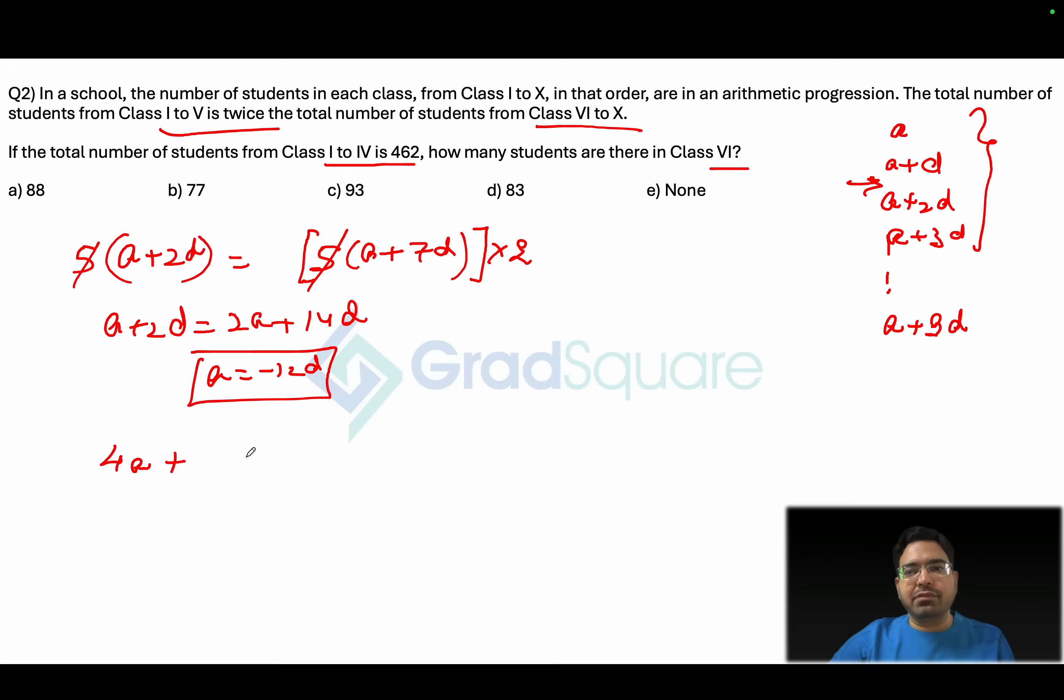So 4a plus 6d will be the number of students from class 1 to class 4. That value is turning out to be equals to 462. Now how many students are there in class 6 is what the question is. Class 6 would imply a plus 5d is what we need to find out.